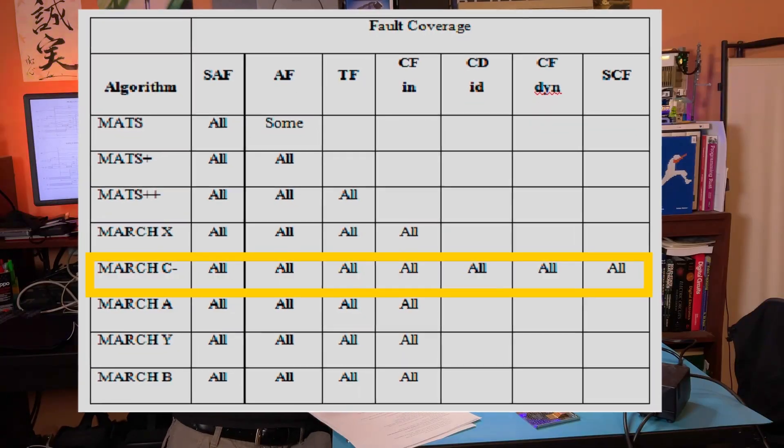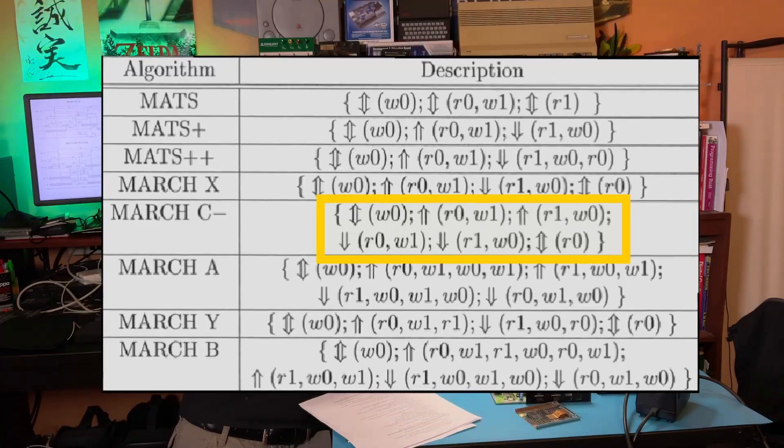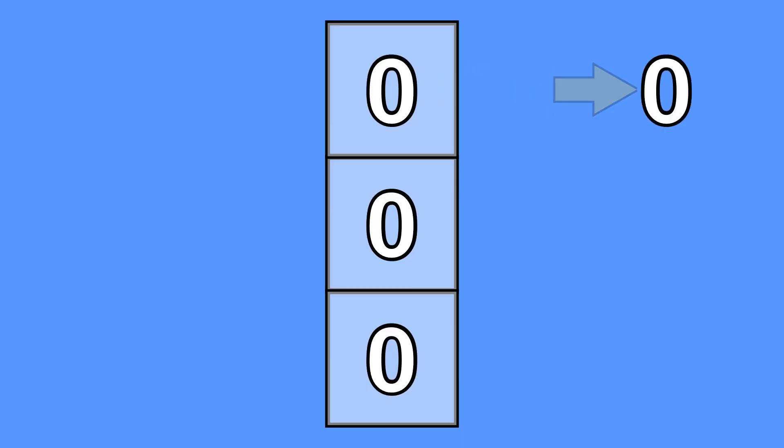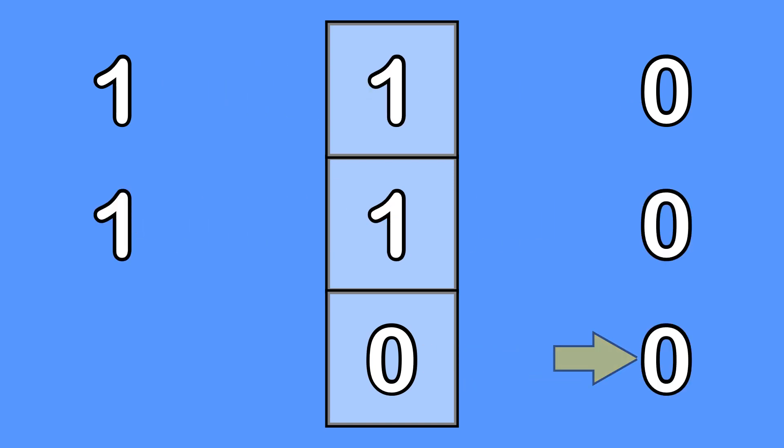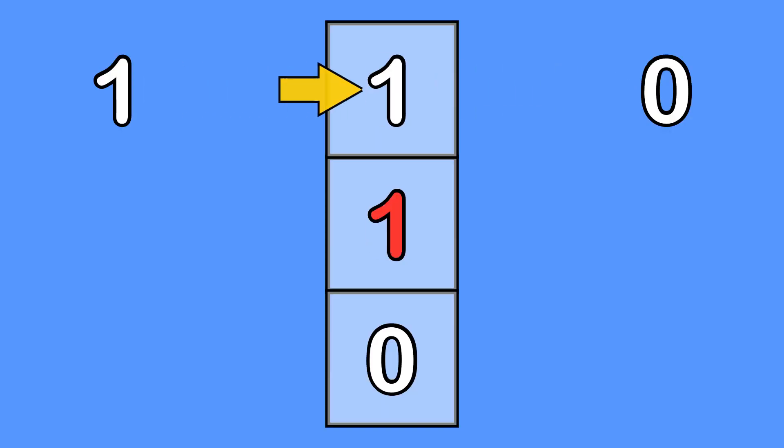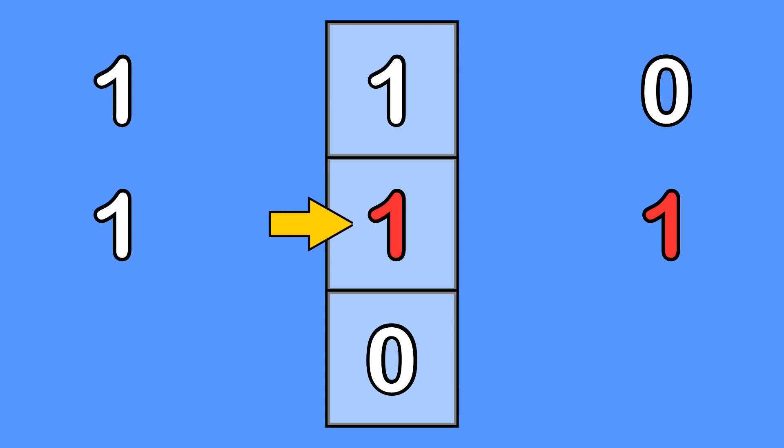But there's a faster way. It's called March C-, and it only requires 5 reads and 5 writes at each address, which brings the 64 kilobit RAM down from 2 hours to just 1 second. There are two tricks that make it work. The first is to read and write through each pass through RAM — first reading the old value and then writing the new value. This way, address or coupling faults caused by previous writes would show up in later reads, which wouldn't be detected if the read and write were done in different passes.